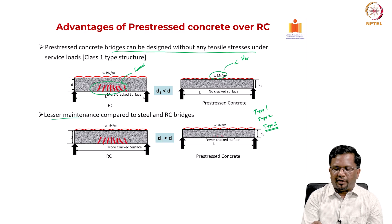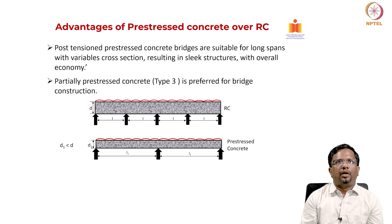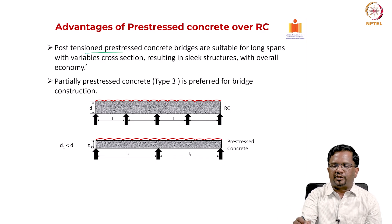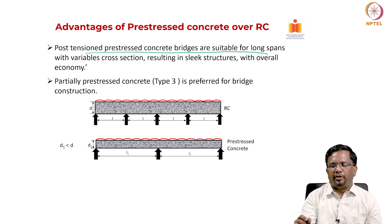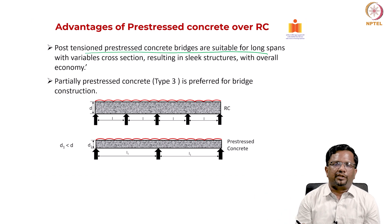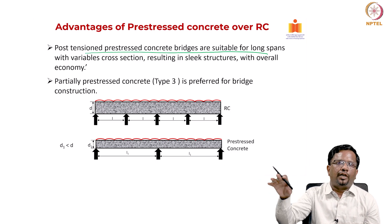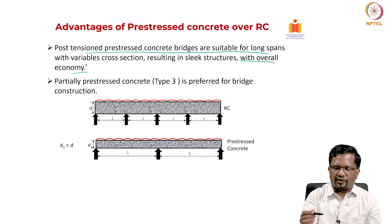You will end up with lesser maintenance compared to steel and regular RC bridges. Another important application is that post-tensioned pre-stressed members are suitable for long spans with variable cross sections — the cross section can change as you go along. For example, in balanced cantilever construction the thickness of the element comes down as you move to the mid-span location, leading to overall economy in construction.